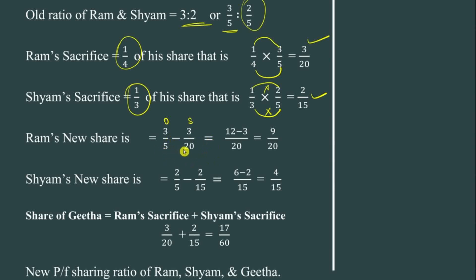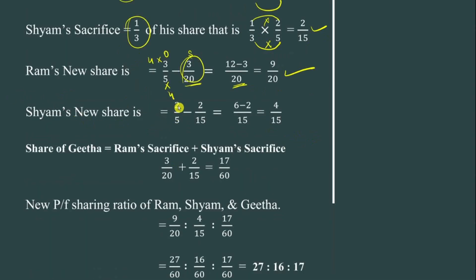For Ram's new share, subtract 3/5 minus 3/20. Using the shortcut method: the highest denominator is 20, lowest is 5. Multiply: 4 into 3 is 12, minus 3, equals 9. So Ram's new share is 9/20.